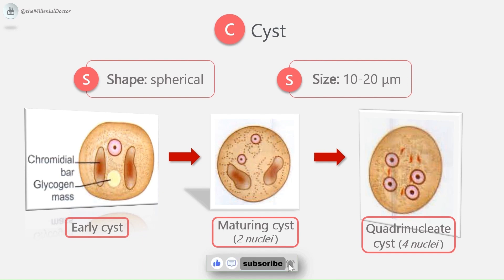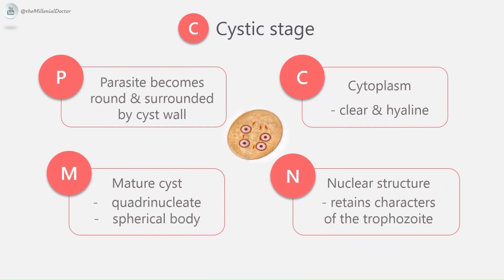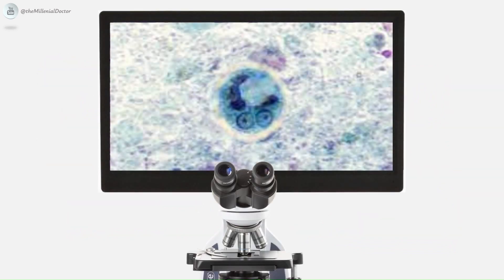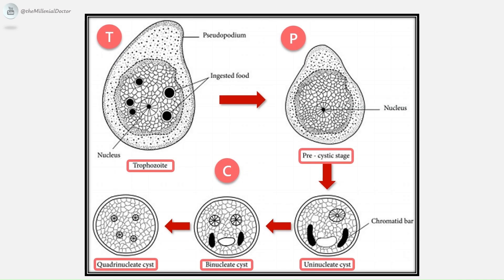The cyst wall is a highly refractile membrane, making it highly resistant to gastric juice and helping it survive under unfavorable environmental conditions. This is the evolution of Entamoeba histolytica from a trophozoite stage to a pre-cystic stage, then a uninucleate cyst, a binucleate cyst, and finally a quadrinucleate cyst.